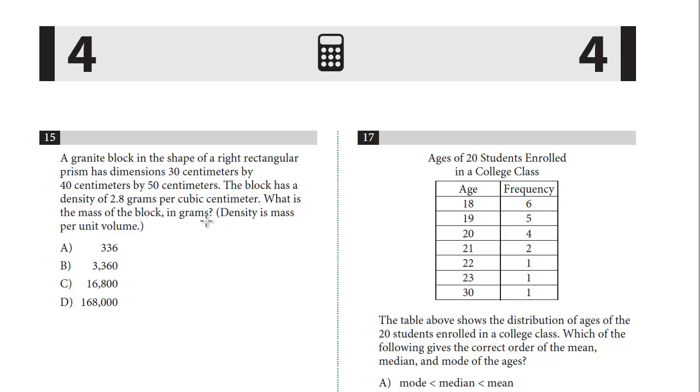Density is mass per unit volume. So we have to find the mass. They give us the formula d equals m over v, that's mass per unit volume. So to solve for m, we just multiply both sides by v. And we get d times v equals m. We're also given that the density is 2.8.